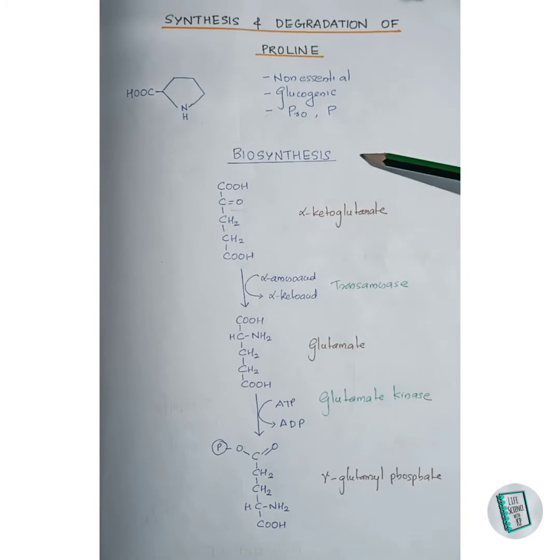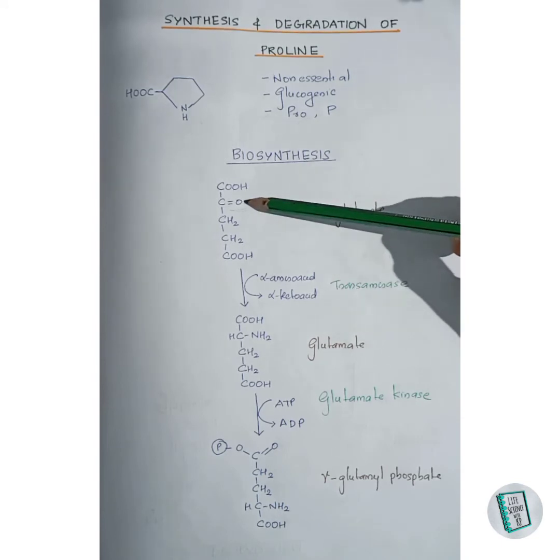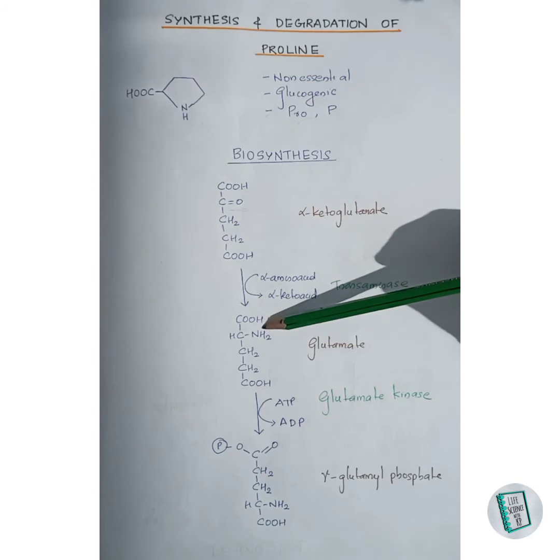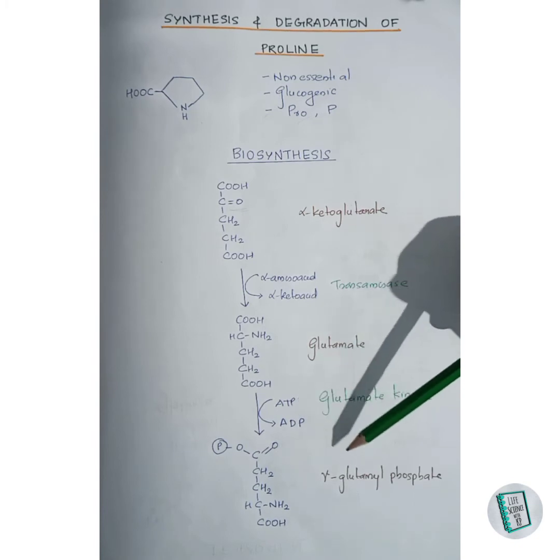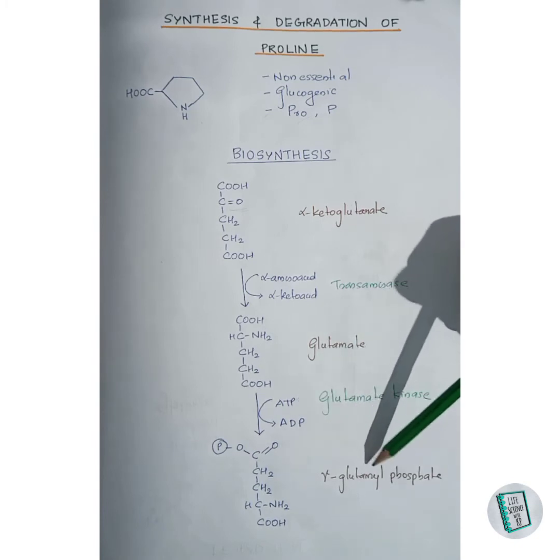Now let us move on to the biosynthesis of proline. The biosynthesis of proline starts with alpha-ketoglutarate. This alpha-ketoglutarate first gets transaminated by a transaminase enzyme to form glutamate. The keto group of alpha-ketoglutarate gets converted to an amino group, forming glutamate. This glutamate then in the presence of glutamate kinase and ATP forms gamma-glutamyl phosphate.